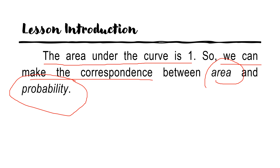If the sum equals 1, then we can move forward in using your normal curve to present those probabilities. We can deal with the Z-table and the concept of correspondence between your area and your probability. Because in every area we are dealing with in your normal curve, that will be equal to the probabilities mapped to each random variable in your probability distribution table.